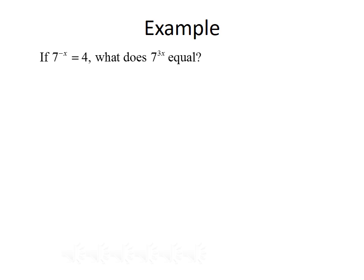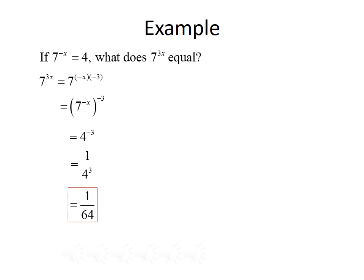Here's one final example: if 7 to the minus x equals 4, what does 7 to the 3x equal? We rewrite 7 to the 3x as 7 to the minus x times negative 3, which by the exponent property equals 7 to the minus x raised to the negative 3 power. Since we know 7 to the minus x equals 4, we substitute to get 4 to the negative 3. The negative exponent moves the expression to the denominator: 1 over 4 cubed, which evaluates to 1 over 64. So 7 to the 3x equals 1 over 64.